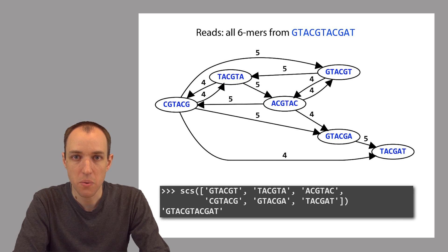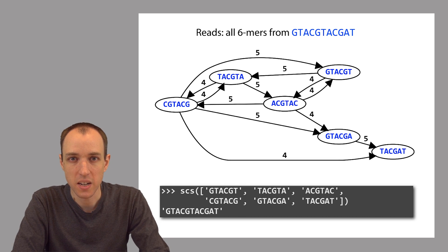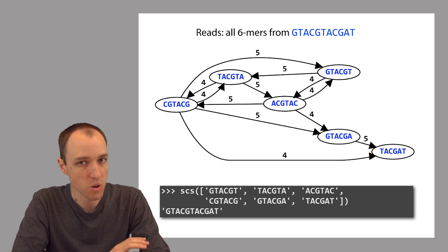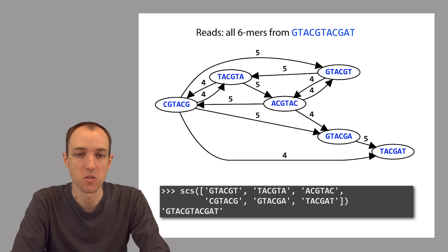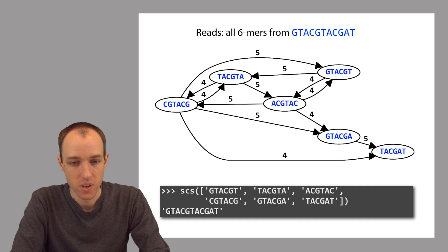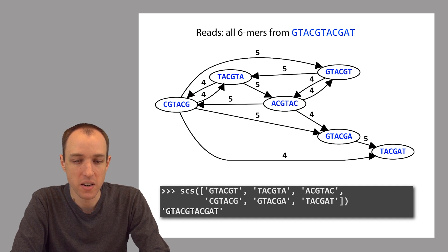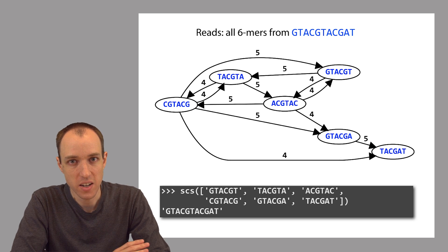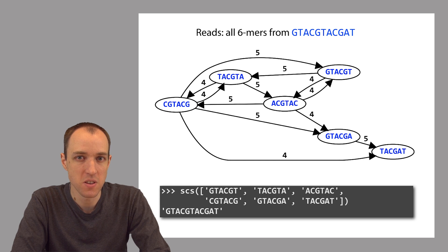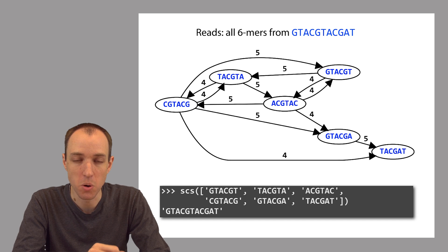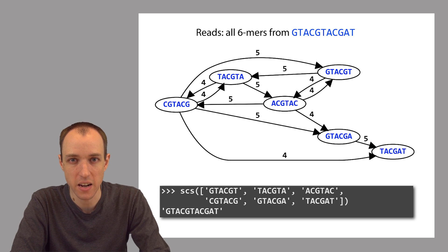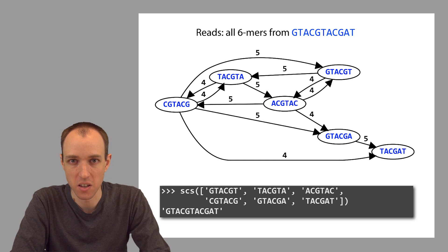When we do that, we get the correct answer, so we should be pleased with our progress so far. We've formulated a computational problem that corresponds very closely to the assembly problem. Furthermore, this formulation has a nice feature: it finds the shortest common superstring — not just any common superstring, but the shortest one. In some sense, this is the most parsimonious explanation for the set of input reads, and that seems like a good property to have.